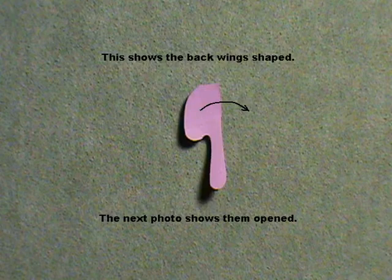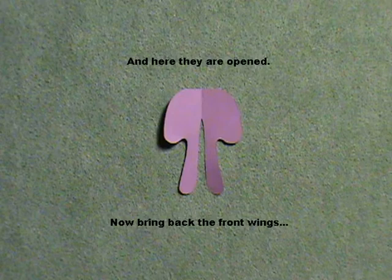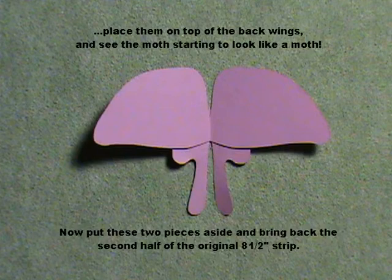This shows the back wing shaped. The next photo shows them opened. And here they are opened. Now bring back the front wings. Place them on top of the back wings and see the moth starting to look like a moth.